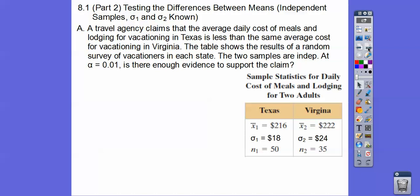A travel agency claims that the average daily cost of meals and lodging for vacationing in Texas is less than the same average cost for vacationing in Virginia. The table shows the results of a random survey of vacationers in each state. The two samples are independent. And we're going to test it at 1%. Is there enough evidence to support the claim that the average cost of meals and lodging is less in Texas than in Virginia?